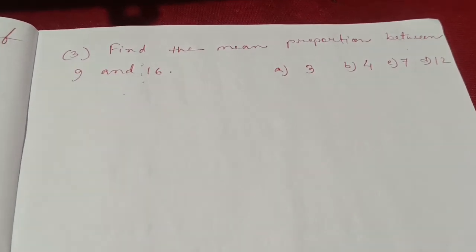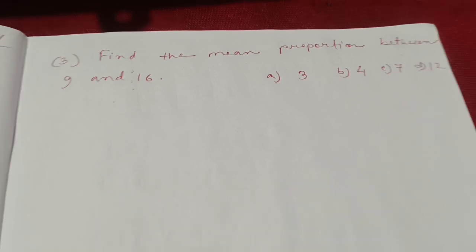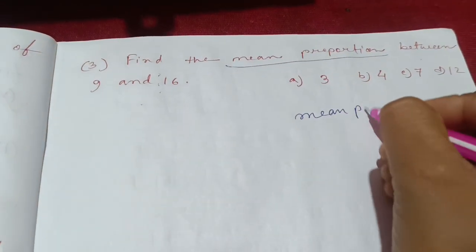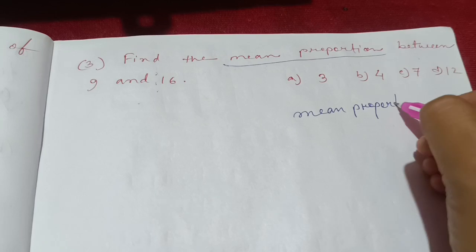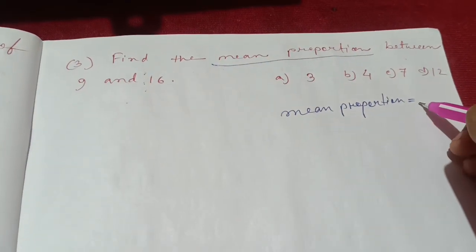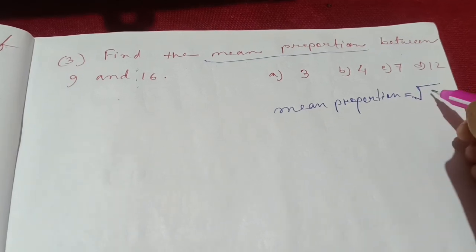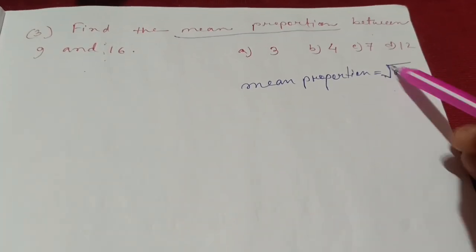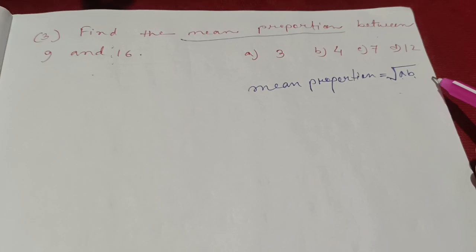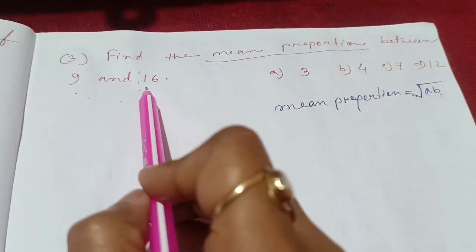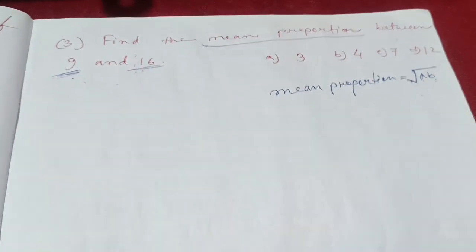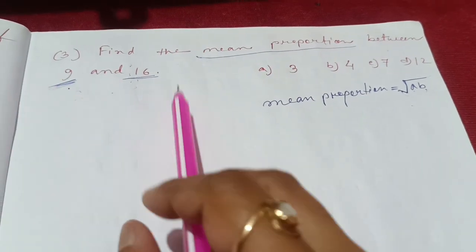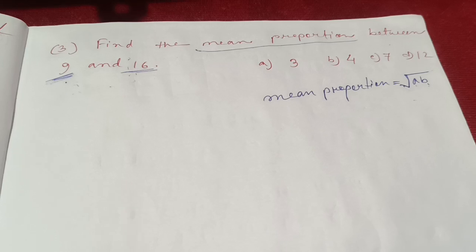The question is: find the mean proportion between 9 and 16. The mean proportion is equal to under root of ab. So the mean proportion is the under root of ab. Looking at a equals 9 and b equals 16, so the root of ab equals the mean proportion.